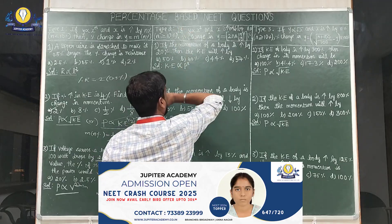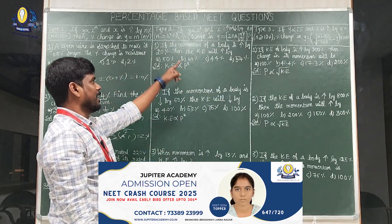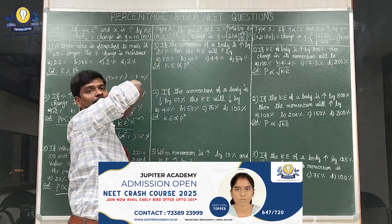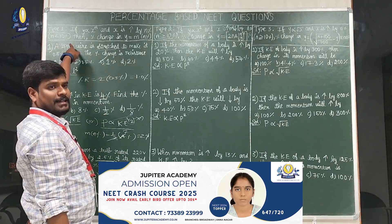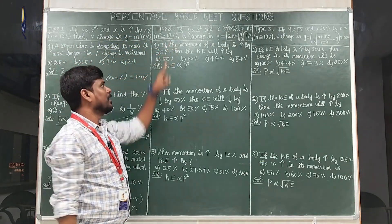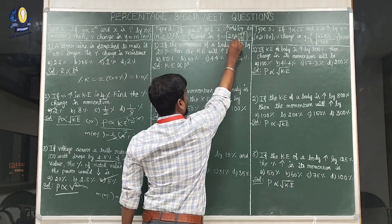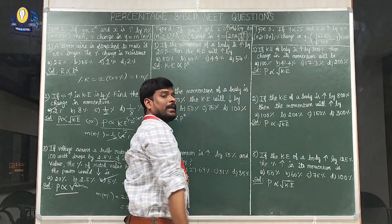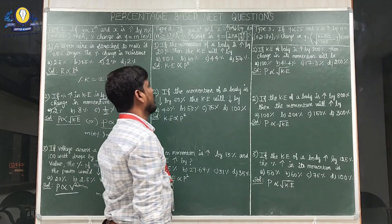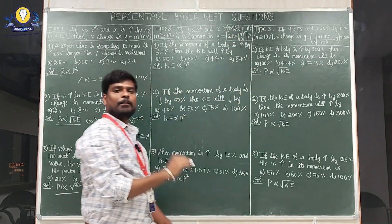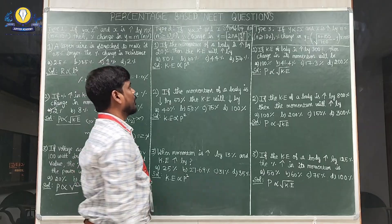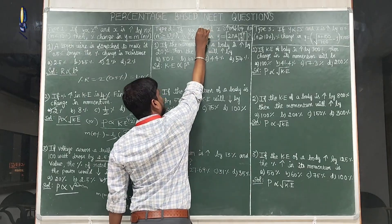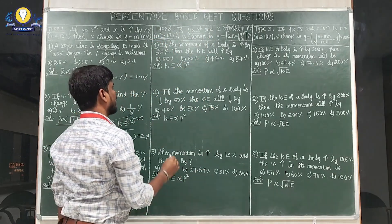Next, Type 2: if y is directly proportional to x² and x is increased or decreased by n, where n is greater than or equal to 10%. In the increase case, the percentage change in y = 2n + (n/10)². In the decrease case, it is 2n − (n/10)². This applies specifically when y is directly proportional to x to the power 2.